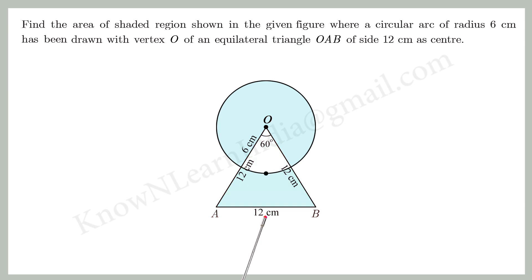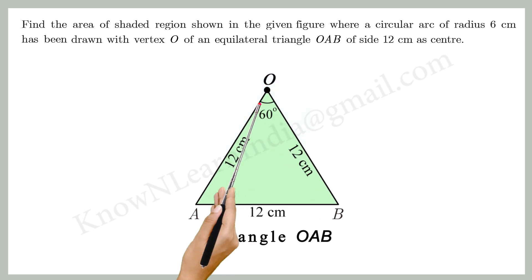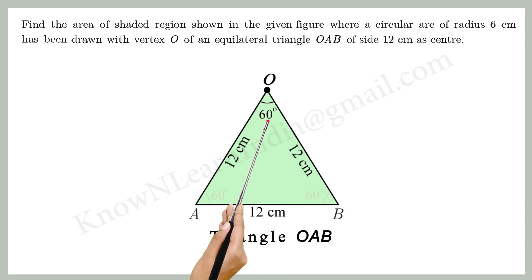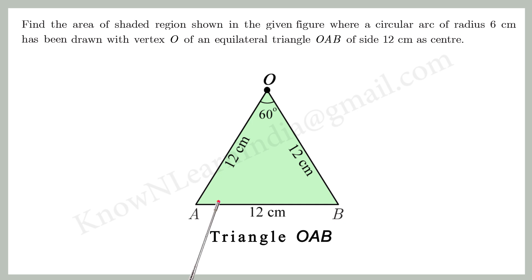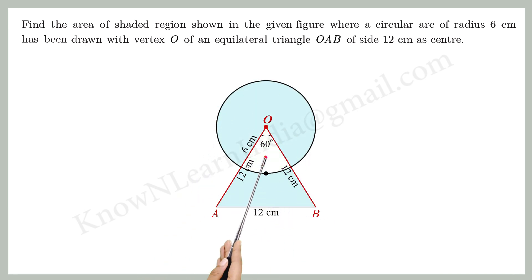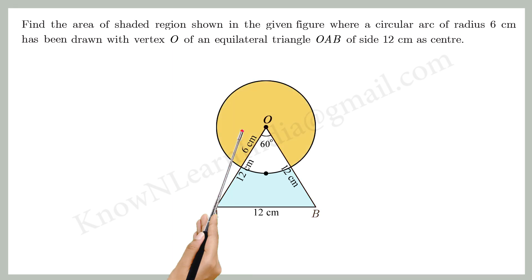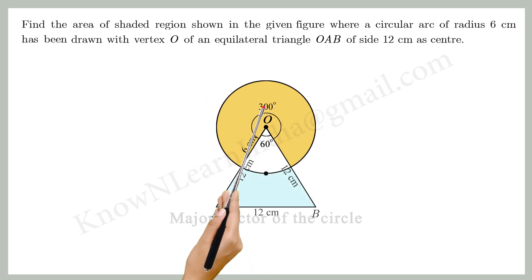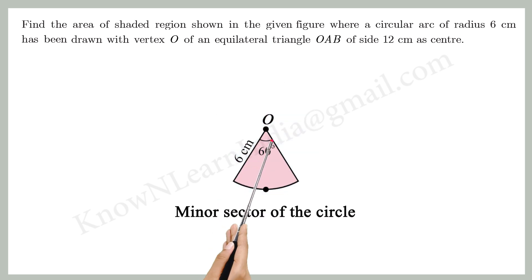Let's see how to find the answer. Since the triangle OAB is an equilateral triangle, all the interior angles are 60 degrees. The sides of the triangle divide the circle of radius 6 cm into a major sector with angle 300 degrees and a minor sector with angle 60 degrees.